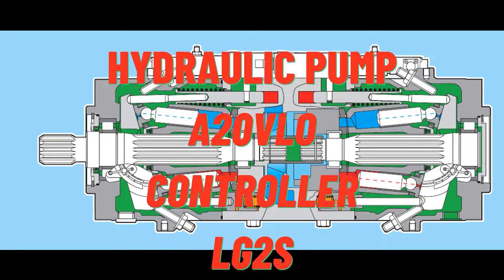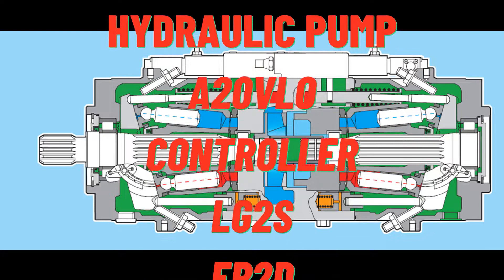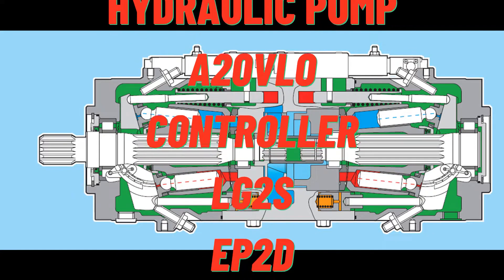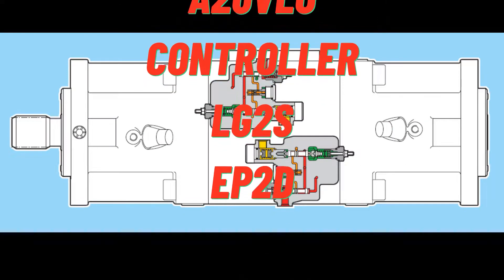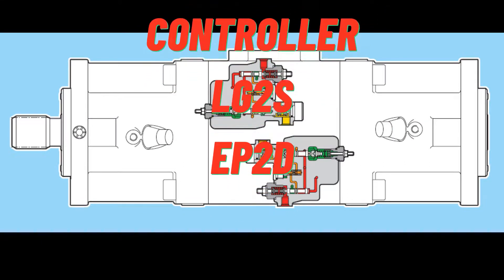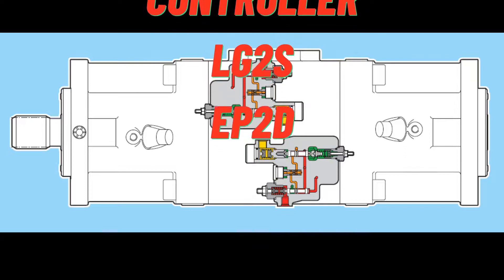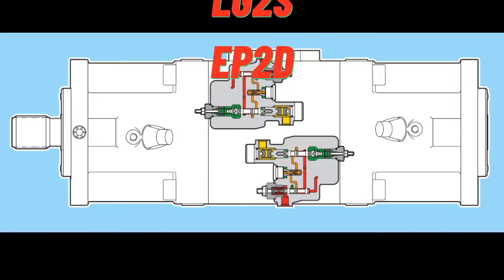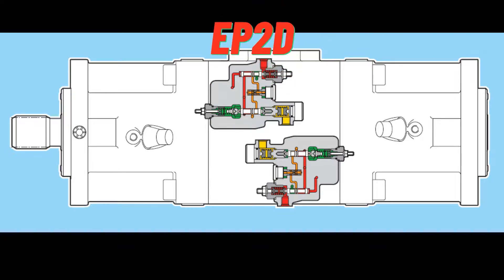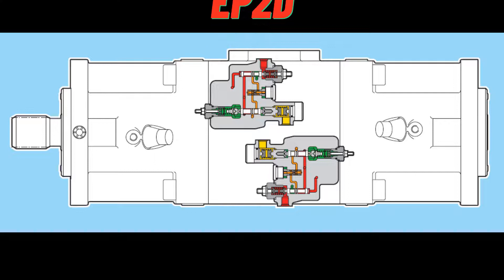Output flow is proportional to drive speed and pump displacement, and is steplessly variable between maximum and zero displacement. Further technical data is available for control devices C4. A11VO types of controllers. A20VLO, LG2S Constant Power Control. A20VLO, EPD Electrical Proportional Control.